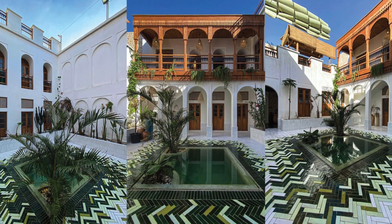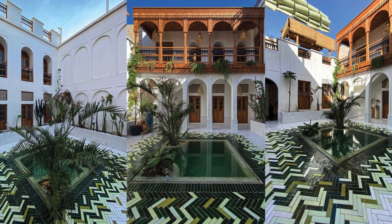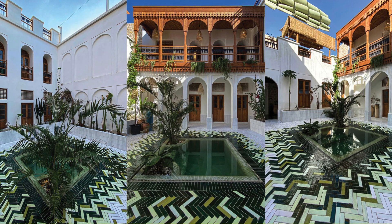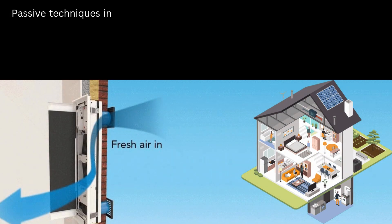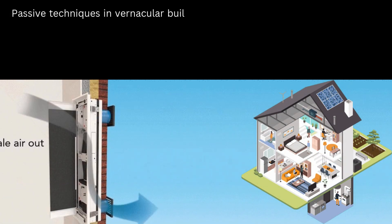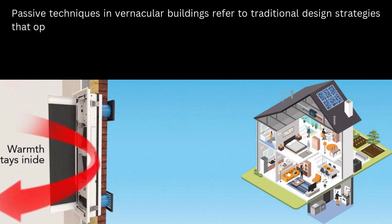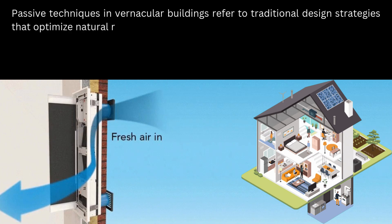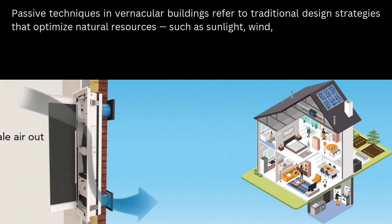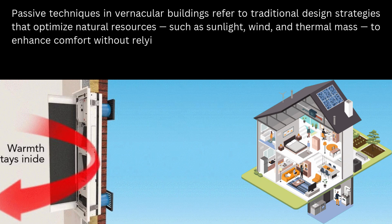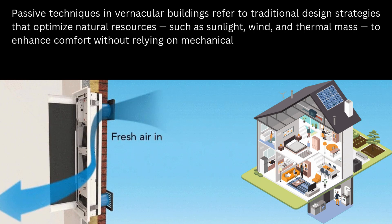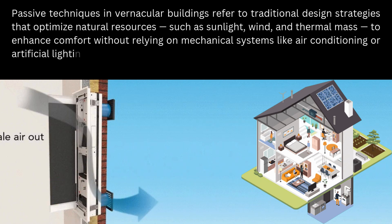In the vernacular residential houses, bioclimatic techniques can be observed. Passive techniques in vernacular buildings refer to traditional design strategies that optimize natural resources, such as sunlight, wind, and thermal mass, to enhance comfort without relying on mechanical systems like air conditioning or artificial lighting.